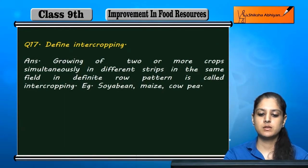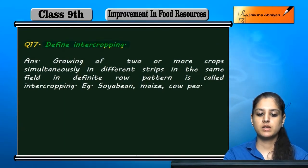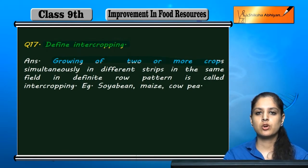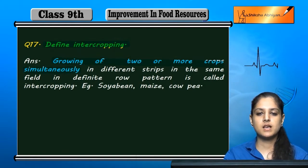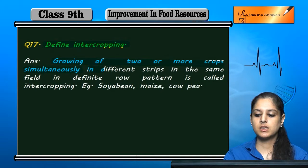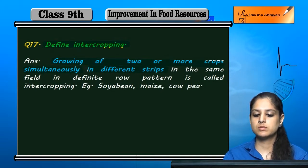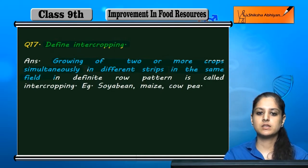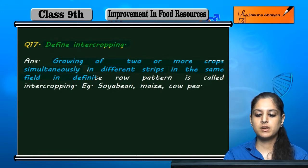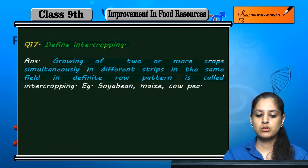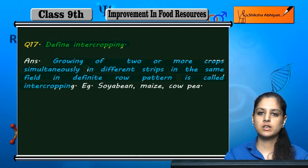Question 17: Define intercropping. Growing of two or more crops in different strips or rows within a definite row pattern is called intercropping.